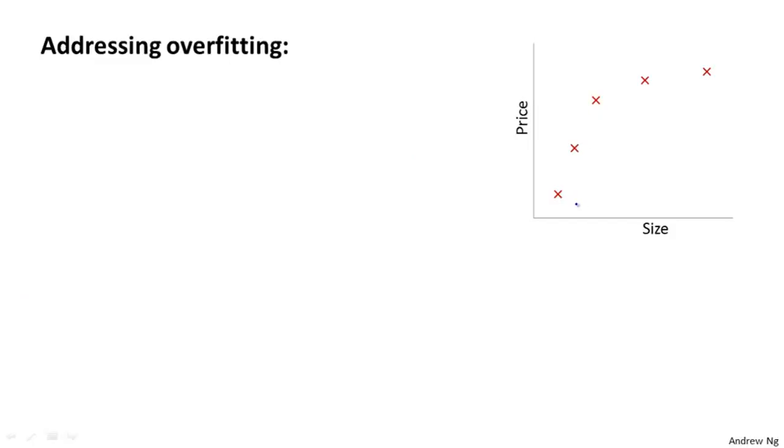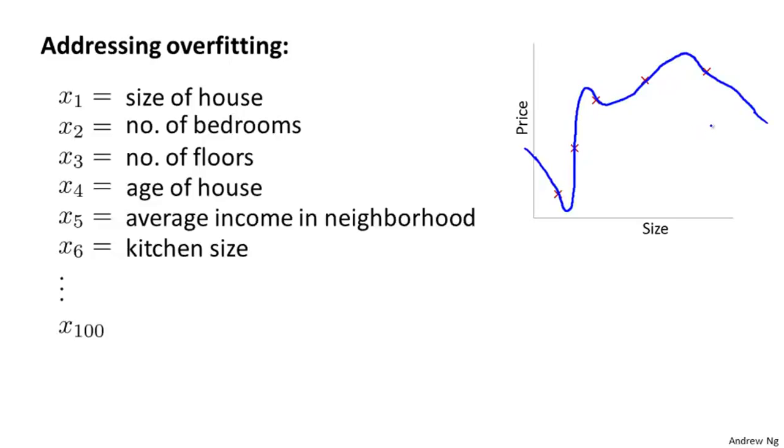In the previous examples, we had one or two-dimensional data, so we could just plot the hypothesis and see what was going on and select the appropriate degree polynomial. So earlier, for the housing prices example, we could just plot the hypothesis and maybe see that it was fitting this sort of very wiggly function that goes all over the place to predict housing prices, and we could then use figures like these to select an appropriate degree polynomial. So plotting the hypothesis could be one way to try to decide what degree polynomial to use, but that doesn't always work. And in fact, more often, we may have learning problems where we just have a lot of features. And there is not just a matter of selecting what degree polynomial, and in fact, when we have so many features, it also becomes much harder to plot the data and becomes much harder to visualize it to decide what features to keep or not.